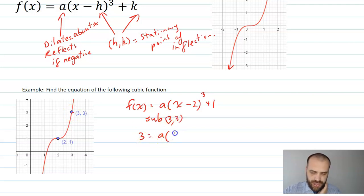I'll have 3 equals bracket 3 minus 2 cubed plus 1. 3 equals a, 1 cubed is 1, so just 1a plus 1. That means that a equals 3 minus 1, which is 2. Therefore, f of x equals 2 bracket x minus 2 cubed plus 1.